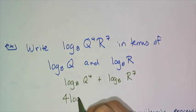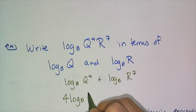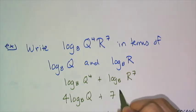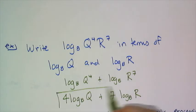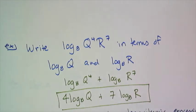So I have 4 times log base 8 of q plus 7 log base 8 of r. And this is that expression expanded out in terms of log base 8 q and log base 8 of r.